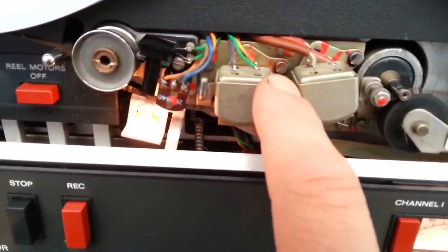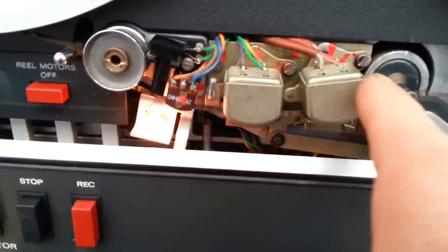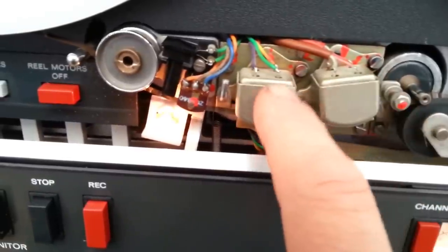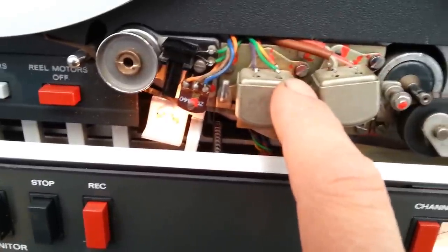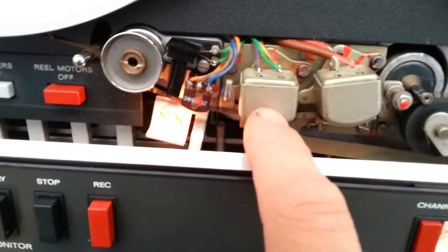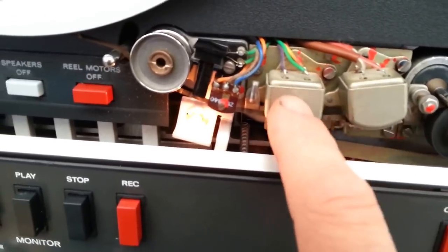The screw here with the red paint on it, that's the azimuth screw. That's the azimuth screw for the playback head. That's the azimuth screw for the record head. Now I'm going to adjust that so this head's alignment matches exactly with the playback head.